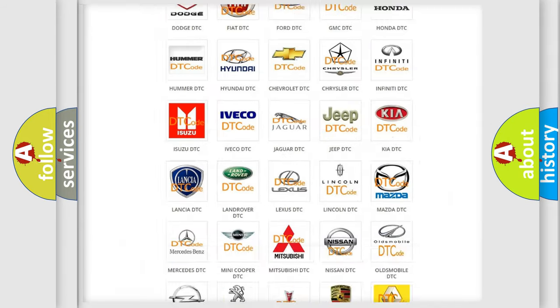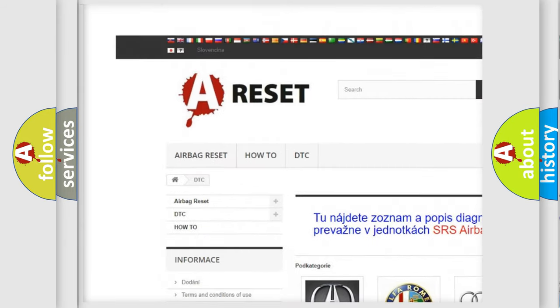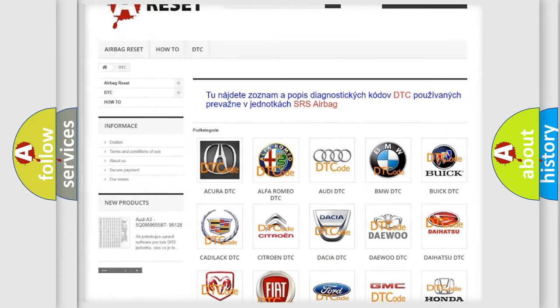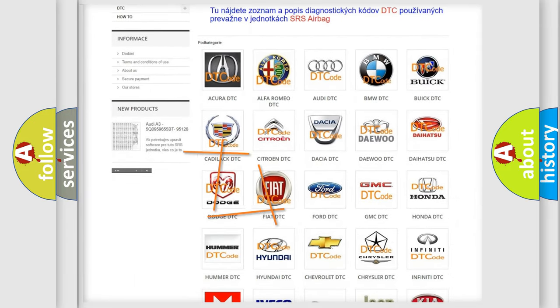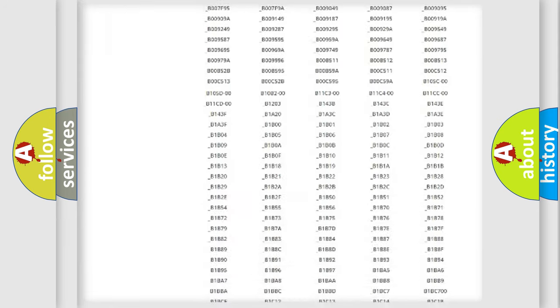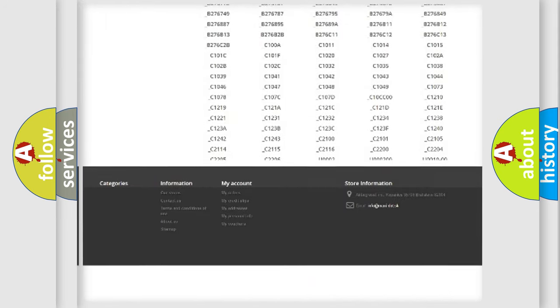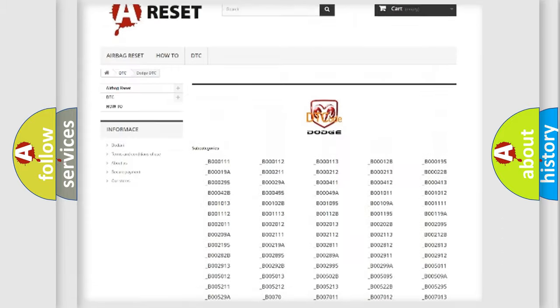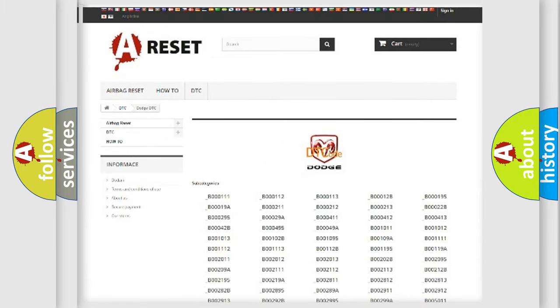Our website airbagreset.sk produces useful videos for you. You do not have to go through the OBD2 protocol anymore to know how to troubleshoot any car breakdown. You will find all the diagnostic codes that can be diagnosed in Dodge vehicles, and many other useful things.